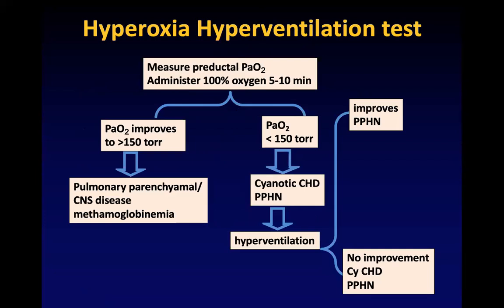The hyperoxia-hyperventilation test is used where echocardiography is not available or you are still in doubt. You cover the baby's head with a hood, give 100 percent oxygen at 5 to 10 liters, and check PaO2 on a blood gas. If PaO2 goes above 150, the lungs are problematic — parenchymal disease or methemoglobinemia. If PaO2 is not rising, it could be heart disease or PPHN. Then you can hyperventilate: if oxygenation improves it is PPHN, but this test only helps rule out PPHN, not rule it in.